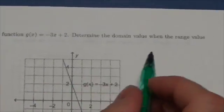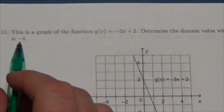It says, determine the domain value when the range value is negative 4.